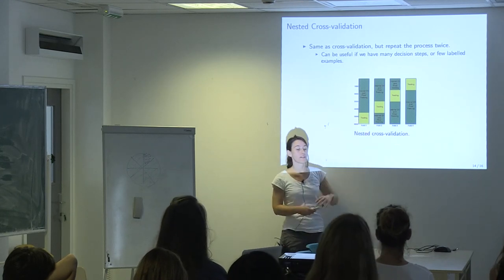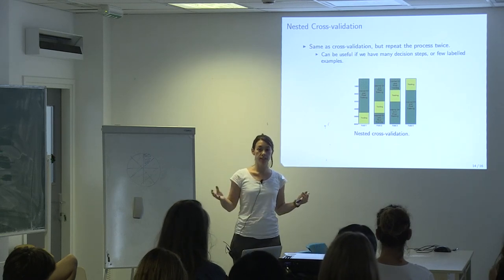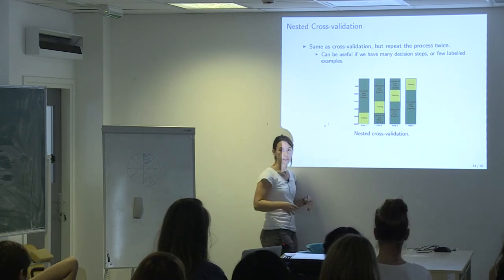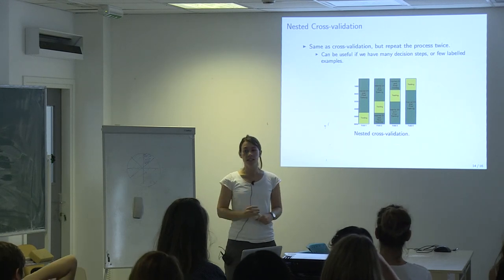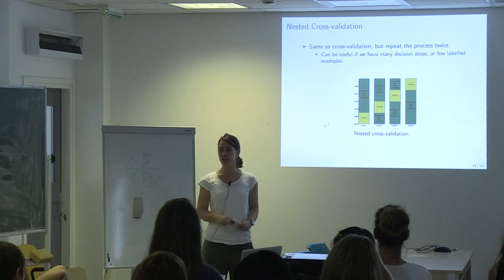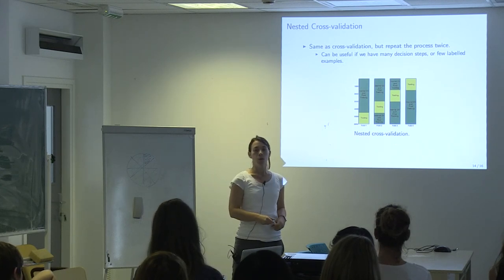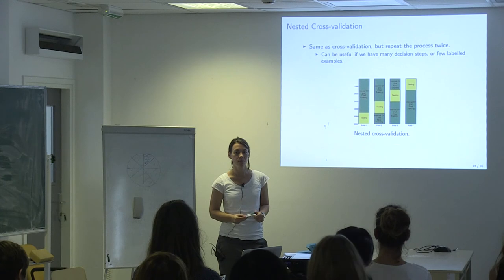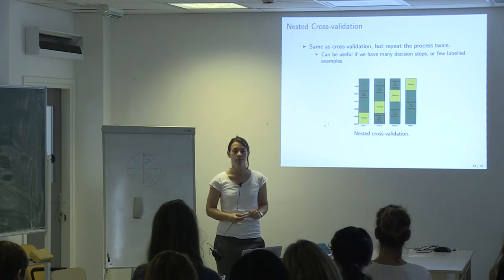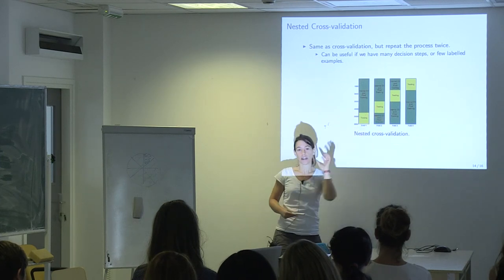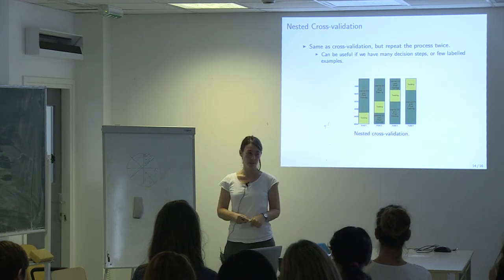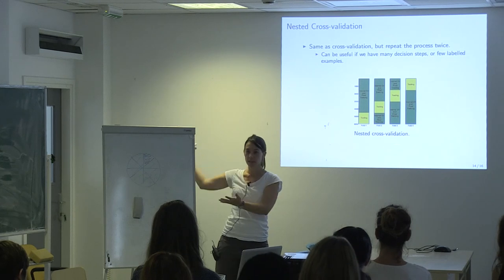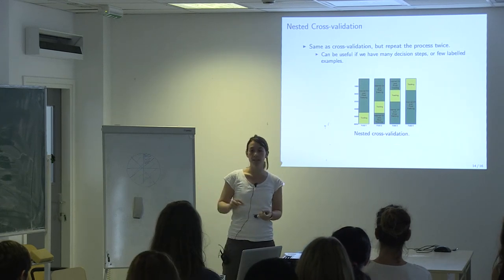If you've done all this — estimated your testing error and know your expected accuracy — and someone wants to use the model for diagnostics, what is the next step? You want to combine everything and train a single model using all of your information. So, having decided the model structure — say, ridge with lambda equals x — you use all your data points to estimate its parameters and deploy that as your final model.